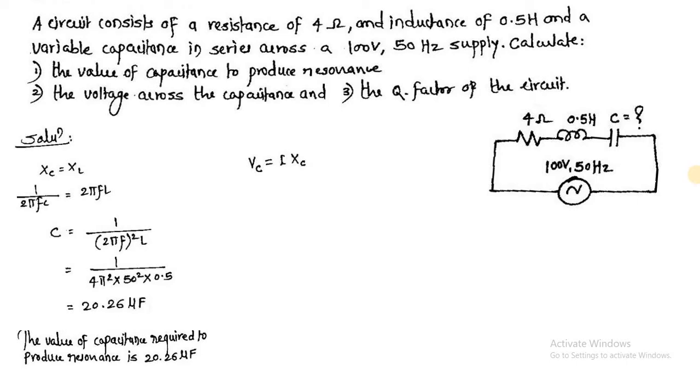The value of VC is equal to I into XC. Now here I do not know the value of I. I can calculate XC, but I do not know the value of I. I is nothing but the ratio of V upon Z. So V upon Z into XC value, that is 1 upon 2πFC. Now how will I get Z?